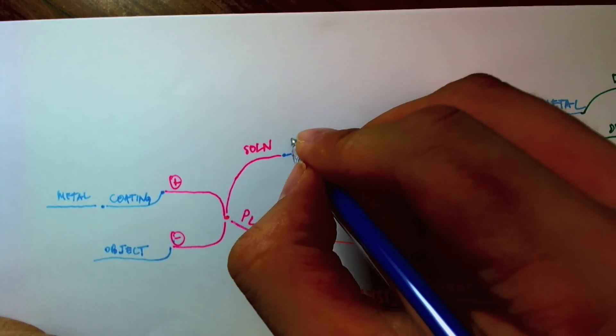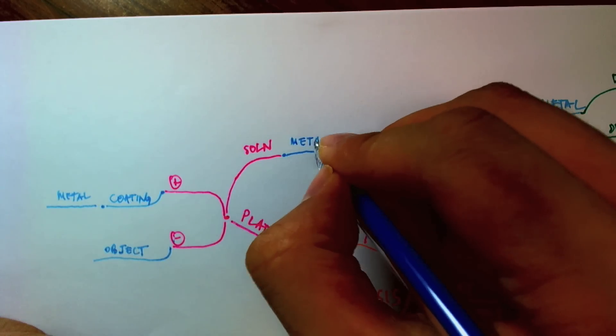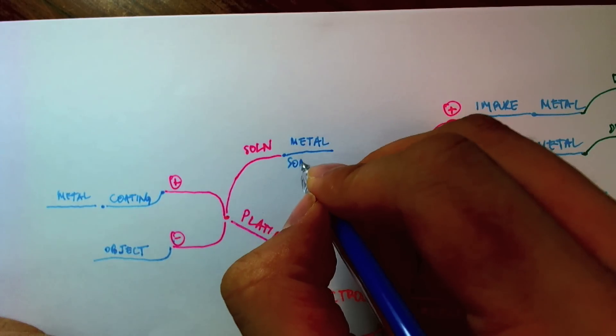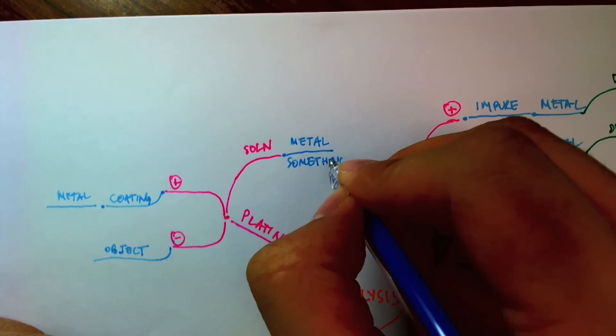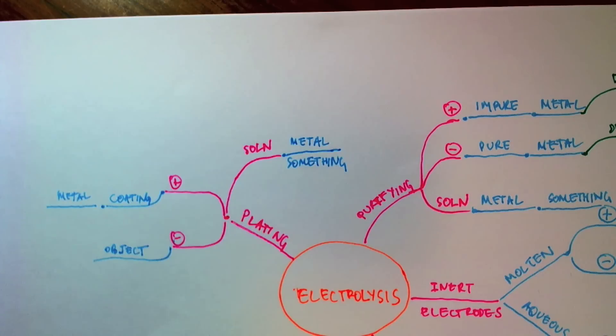In our example, we used silver. So it has to be metal something. So it could be sulfate, nitrate.